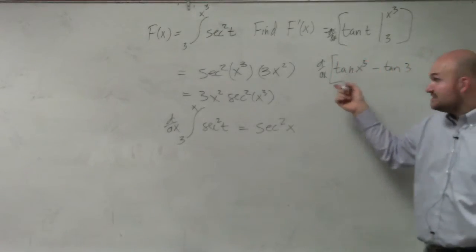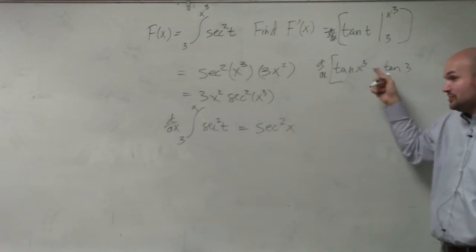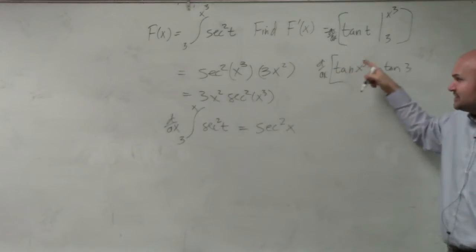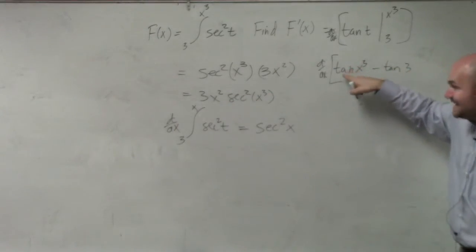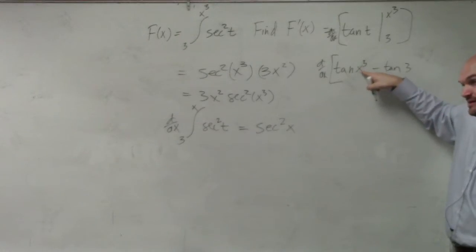Well, if we're taking the derivative of tangent x cubed, you just can't take the derivative of tangent x cubed and say it's secant squared. Right? You have to take tangent and then multiply by the derivative, because you have to apply the chain rule.